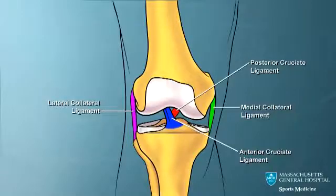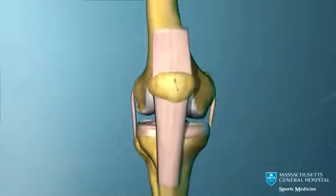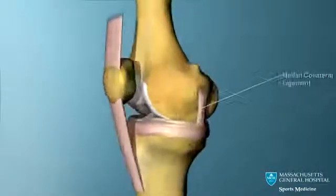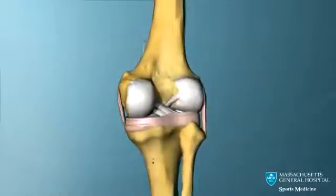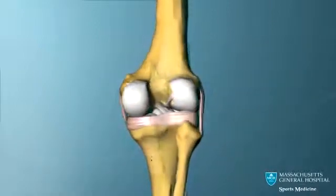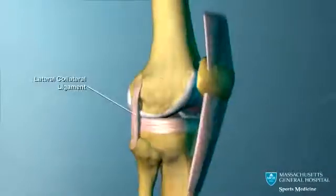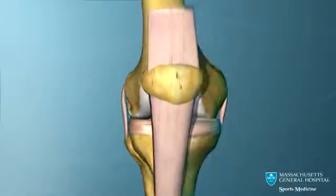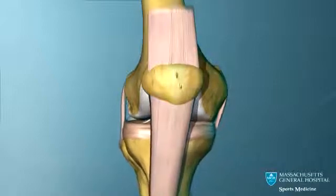There are four major ligaments that stabilize the knee. The medial collateral ligament is on the inner side of the knee and the lateral collateral ligament on the outer side. The collateral ligaments give sideways stability to the knee.